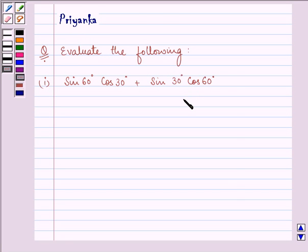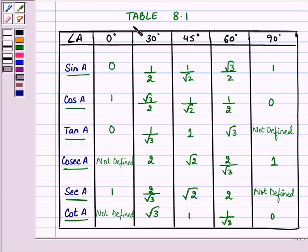Now before proceeding with the solution, we should be well versed with table 8.1 in which we know the values of different trigonometric ratios. What we need to do in this class is learn all these values and substitute them one by one.